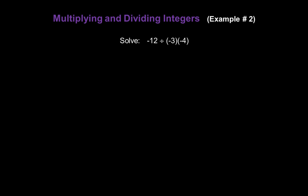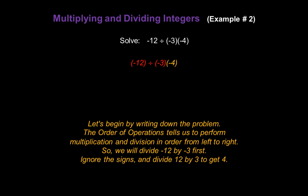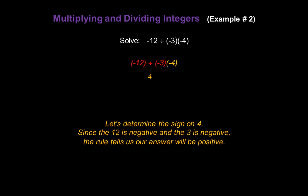Now let's solve negative 12 divided by negative 3 times negative 4. The order of operations tells us to perform multiplication and division in order from left to right. So we will divide negative 12 by negative 3 first. Ignore the signs and divide 12 by 3. We know that gives us 4. Since the 12 is negative and the 3 is negative, the rule tells us our answer will be a positive 4.